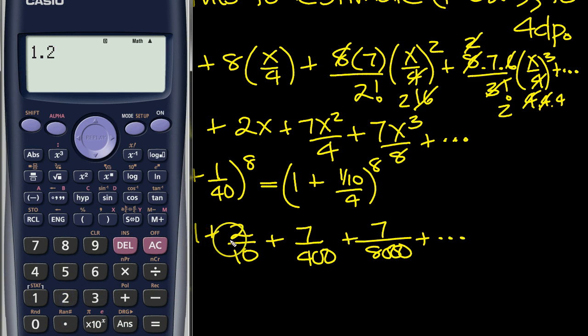1.2, that's 1 plus 2 tenths is 1.2, plus 7 over 400. And then, plus 7 over 8,000, plus 7 divided by 8,000. And this needs to be to 4 decimal places. 1.2184, 2184.